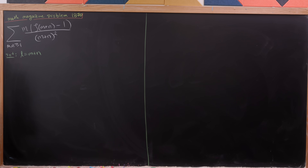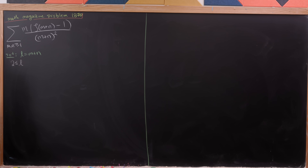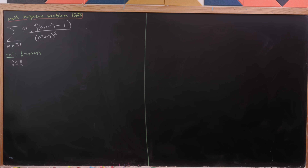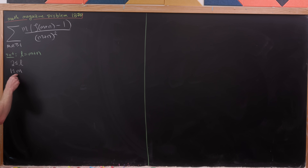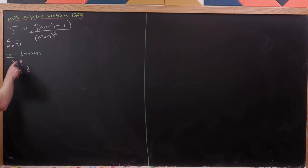Now how does this affect the upper and lower bounds of our indices? Well, if m and n are both starting at 1, then l must start at 2. And l doesn't have a largest value because m and n both don't either. Since l equals m plus n, that only gets rid of one index, so we'll eliminate n. Then m will tend from 1 up to l minus 1, because n starts at 1, meaning l is always at least 1 bigger than m.